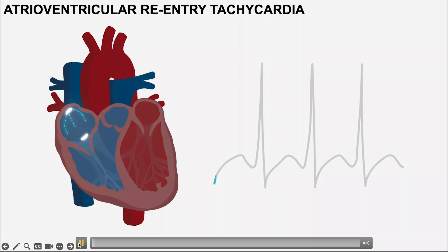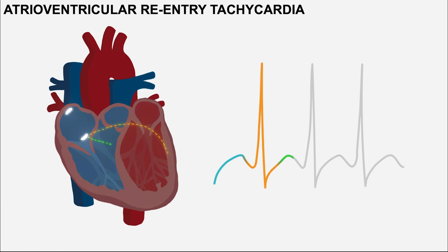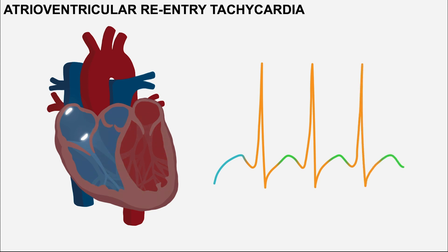We can see how the accessory pathway allows the impulse to travel back into the atria and start the cycle all over again. One important point is that the accessory pathway allows depolarization to move in both directions. When the heart rate is controlled, some depolarization will leak into the ventricles from the atria, giving a shortened PR interval and a slurred upstroke of the QRS complex, also known as a delta wave.